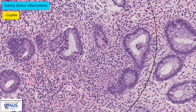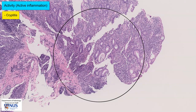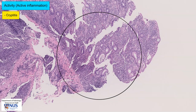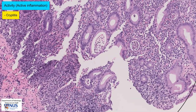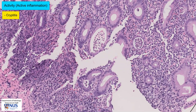Let's look at another case to see another feature of activity. Here is another example of ulcerative colitis and we can see that there are aggregates of neutrophils sitting within the lumina of the crypts. These are known as crypt abscesses, which are another feature of activity.